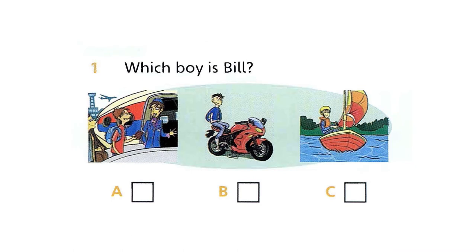1. Which boy is Bill? Is that Bill, the boy on that boat? No, Mum. Look. Bill's sitting on his dad's motorbike. Oh, yes. And where's Bill's dad, then? He's on a plane.